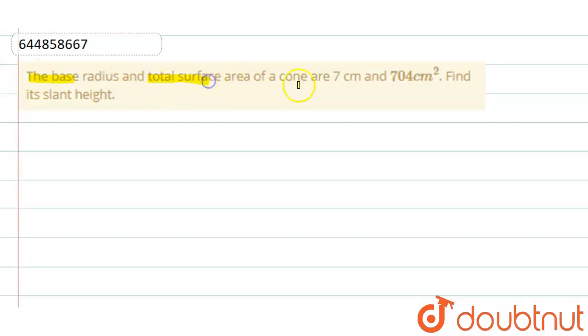Hello friends, the question is: the base radius and total surface area of a cone are 7 centimeter and 704 centimeter square. Find its slant height. So the question is asking us to find slant height, and given total surface area of cone that is 704 centimeter square and radius is given as 7 centimeter.